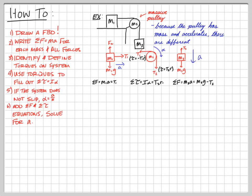Net torque equals I·alpha: T2·R minus T1·R. Substituting I equals one-half M2·R squared and alpha equals A over R: one-half M2·R squared times (A/R) equals T2·R minus T1·R. The A/R and R squared give one factor of R on the left; both terms on the right have R, so all R's cancel. The equation becomes: one-half M2·A equals T2 minus T1.